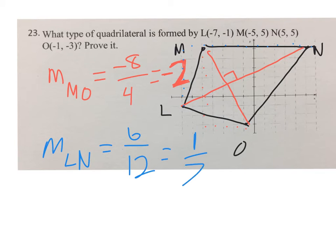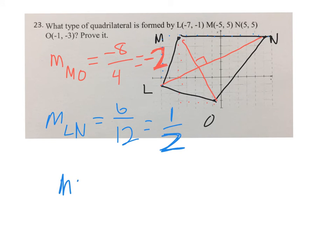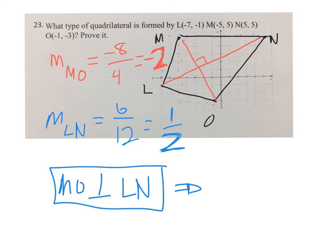Definitely, from what I remember from algebra one, negative two and positive one half are negative reciprocals. Therefore M O is perpendicular to L N, which means we have perpendicular diagonals. So this is going to be a kite.